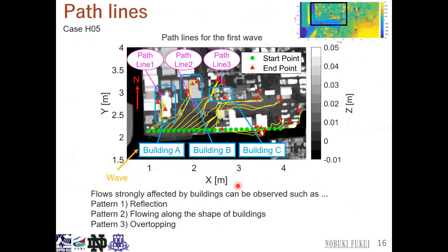We traced path lines for the first wave in the northern area of Kainan. The yellow line shows the path line, the green circle shows the start point, and the red triangle shows the end point. We can observe flow strongly affected by buildings. We can see three major patterns of path lines: pattern one is reflection, pattern two is flowing along the shape of buildings, and pattern three is over-topping.